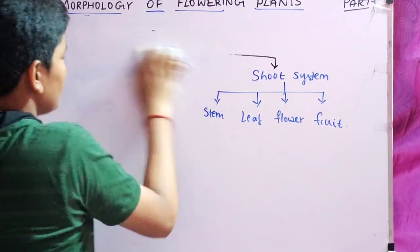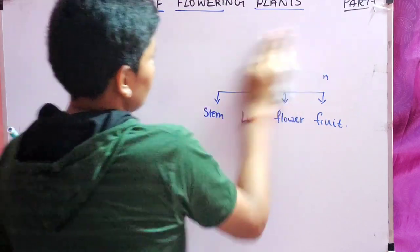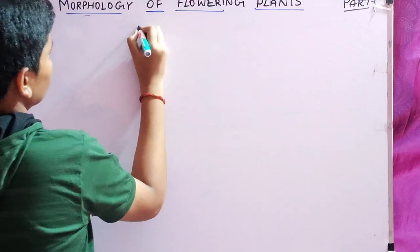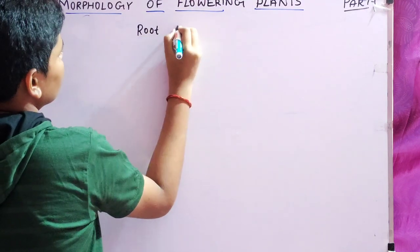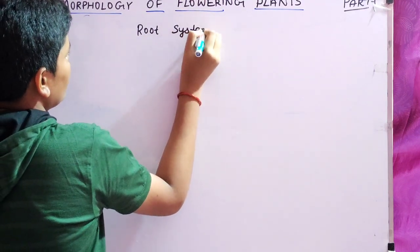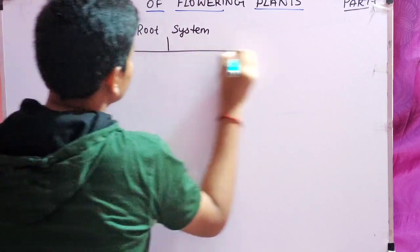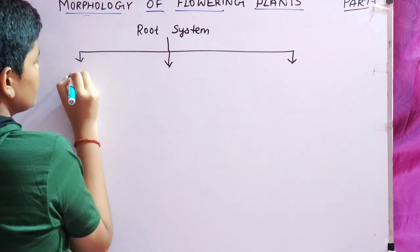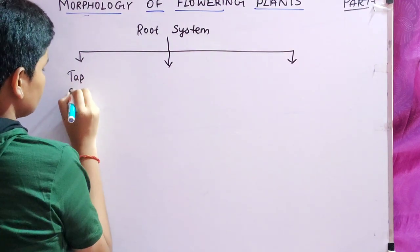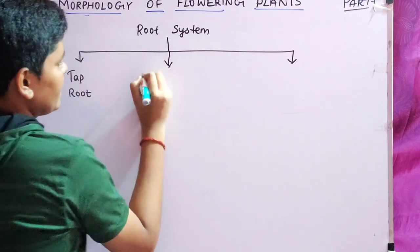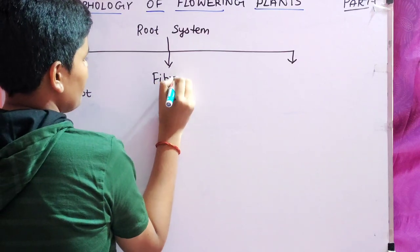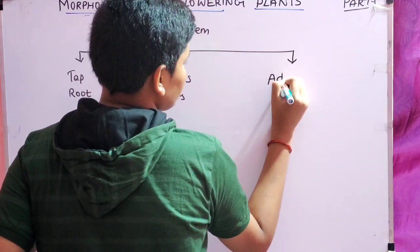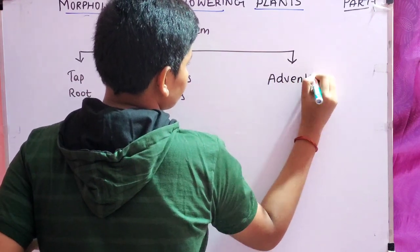Let us start with the root system. The root system has three types: first type is tap root, second type is fibrous roots, and the third type is adventitious roots.